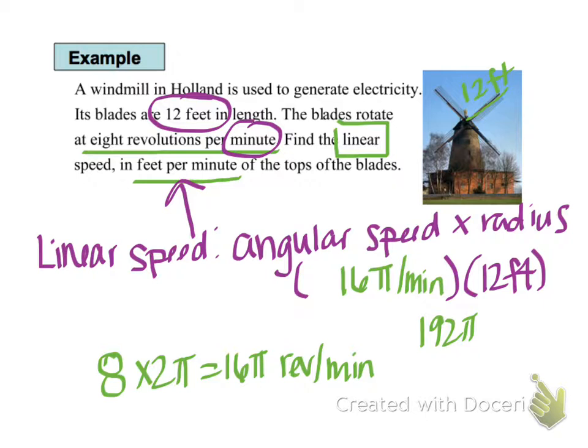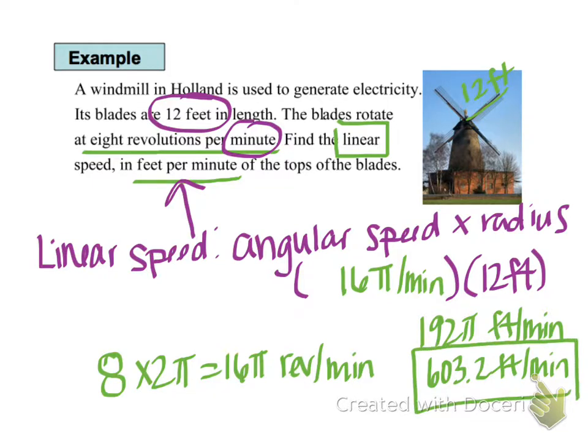And I'm sorry, it's 192 pi feet per minute, not revolutions per minute. So it's going 192 pi feet per minute. Now in terms of a real world situation, 192 pi doesn't mean much to me. So if I multiply those together, we get 603.2 feet per minute. And that's how fast that blade is traveling, the end of the blade.